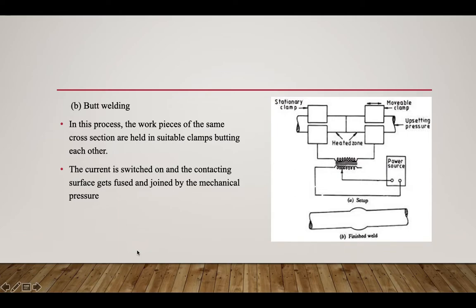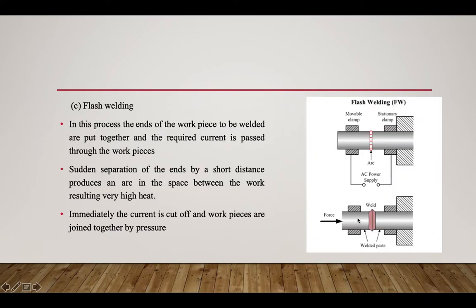Butt welding is again a form of resistance welding. In this process, workpieces of the same cross-section are held in suitable clamps butting each other, forming a butt joint. A current is switched on and the contact surfaces get fused and joined by mechanical pressure.